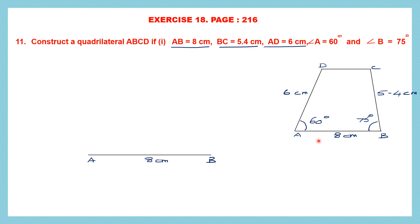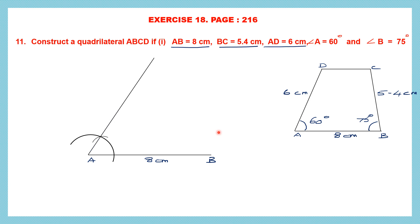Now in the next step, we're going to construct 60 degrees at A. Now we all know how to construct 60 degrees with the help of a compass. You can also use a protractor based on the instructions given by your teacher. If you're going to use a compass, draw an arc taking a suitable measurement, placing the needle of the compass at point A. Then placing it at the point where the arc cuts line segment AB, draw one more arc. This arc marks the point of 60 degrees — draw a straight line through that. So we have constructed 60 degrees at A.